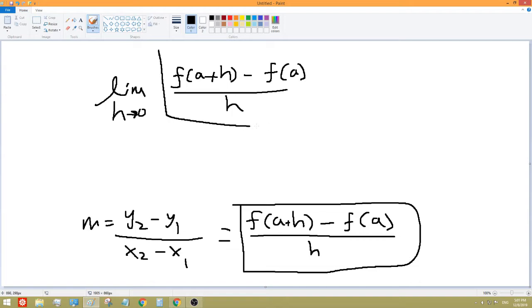We'd have limit as H approaches zero of F of A plus H minus F of A over H. Now just remember this very closely. This part is really just Y2 minus Y1 over X2 minus X1. That's all this whole thing is, where H is some tiny number.